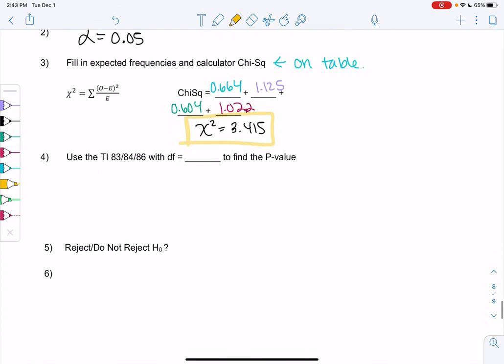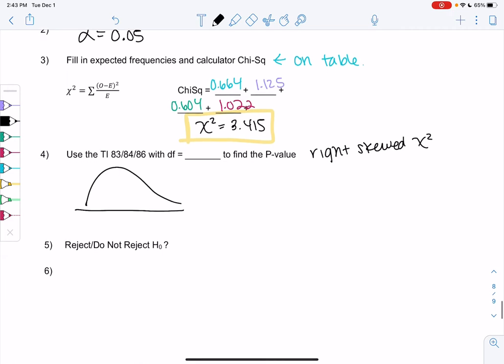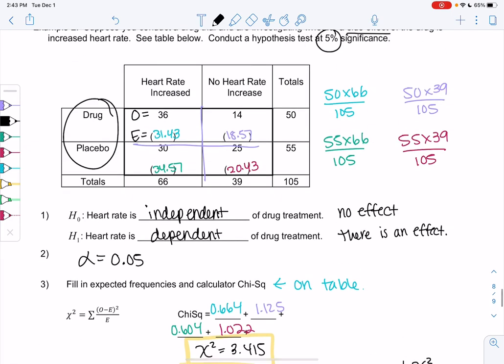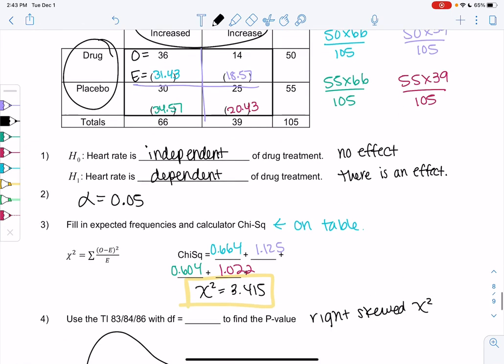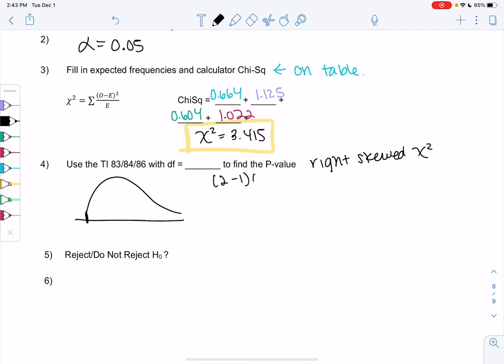All right, so let's go ahead. Final steps get faster. That's the worst step. So we're going to find the p-value. We're on a right-skewed chi-square curve. So no tail. Degrees of freedom is categories minus 1, categories minus 1. So 2 minus 1 times 2 minus 1. So it's actually just 1 here. 1 times 1.